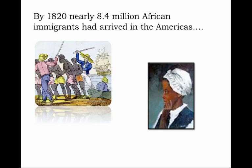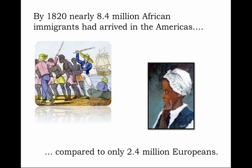Just how large a migration was this? By 1820, nearly eight and a half million African immigrants had arrived in the Americas compared to only about 2.4 million Europeans. That is to say that almost 80% of those who had arrived in the Americas by 1820 had come not from Europe, not from England, but rather from Africa as part of the great Atlantic slave trade.